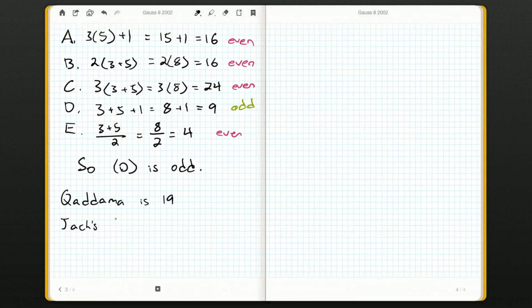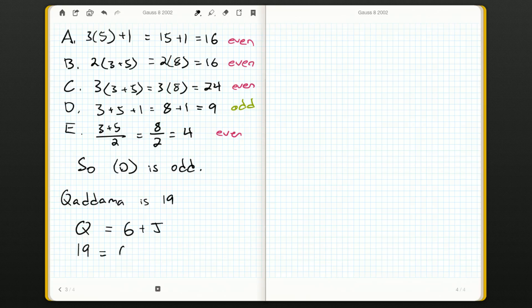We're told that Kadama's age is... I'm going to use Q for Kadama's age, just so I don't need to keep writing out all these names. I'm going to use Q for Kadama's age. I'm going to use J for Jack's age. Q's age is 6 plus Jack's age, because it's 6 years older than Jack. So, 19 is 6 plus J. We can rearrange these by subtracting 6 on both sides, and we get that Jack must be 13.